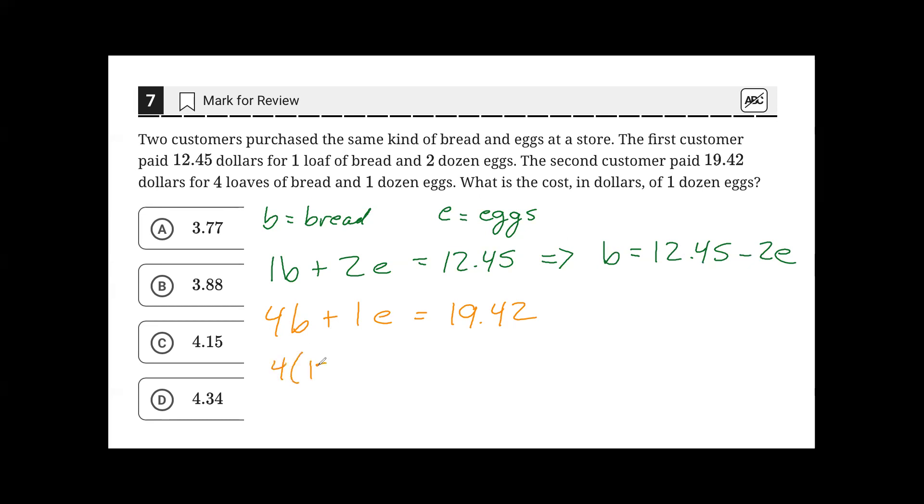4 times 12.45 minus 2E plus E is equal to $19.42.